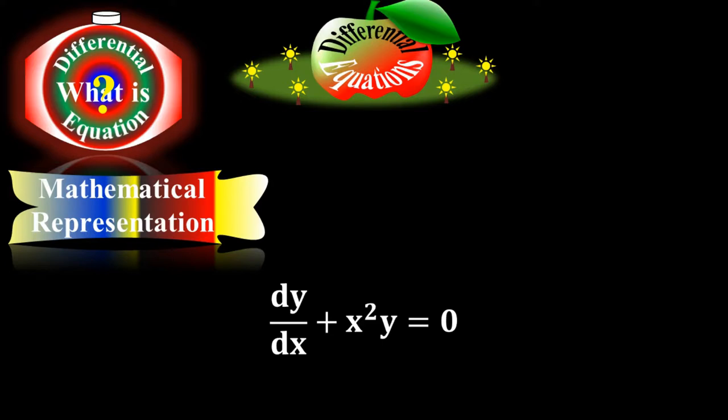The second definition was an equation that relates an independent variable to a dependent variable is a differential equation. Now according to the second definition, y is a dependent variable and x is an independent variable here.